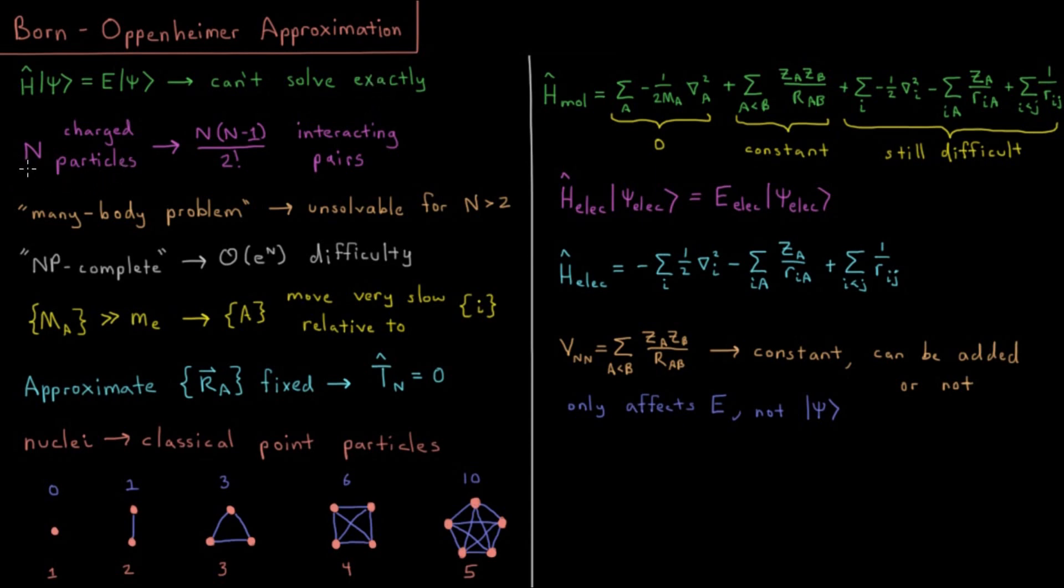The reason this is, is because we have n charged particles. A typical molecule or molecular system is composed of a bunch of nuclei and a bunch of electrons. So we have a bunch of charged particles there, and if we have n total charged particles, we'd have n choose 2, or n times n minus 1 over 2, interacting pairs.